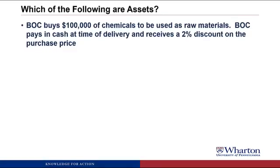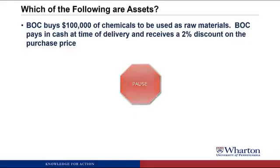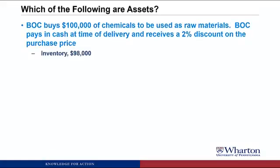BOC buys $100,000 of chemicals to be used as raw materials. BOC pays in cash at the time of delivery and receives a 2% discount on the purchase price. This is an asset, and we'll call it inventory — a term we use for any product or raw materials we buy that we're going to turn into a finished product to sell at a markup. Note that the value here is $98,000, not $100,000, because we value it at what we actually paid, not some higher sticker price.